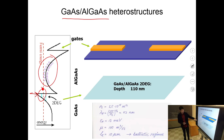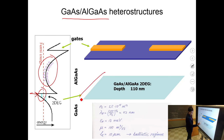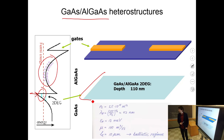At the interface there is a kink in the conduction band, and for the proper alignment — with the right amount of positively charged dopants donating electrons that fall into this quantum well — we can have just a single sub-band occupied in this interface potential trap. This is a top view on a three-dimensional crystal. The triangular well corresponds to a two-dimensional free electron gas, constrained in one dimension but free in two. In a typical structure this would be buried about 100 nanometers below the surface.